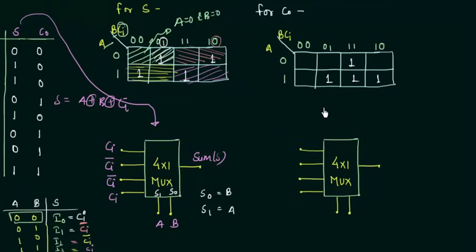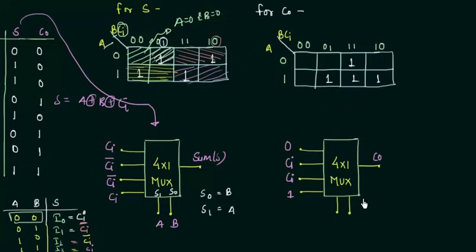For the Carry Output, I will leave it as homework for you to determine the values and implement it in the 4×1 MUX. I will write down the outputs so you can check your answer: I0 = 0, I1 = Cin, I2 = Cin, I3 = 1. The selector variables are again B and A. If you face any problem, let me know in the comment box. See you in the next presentation.